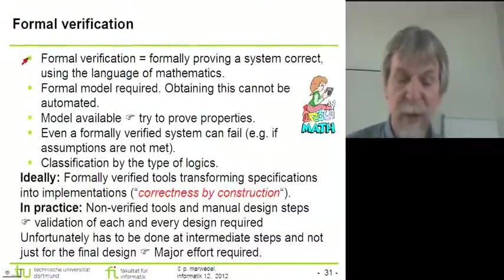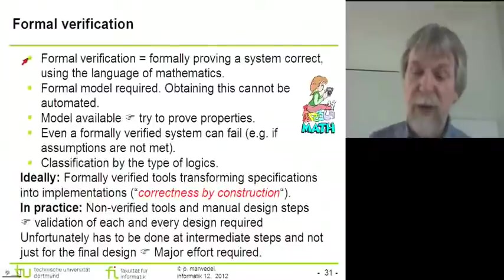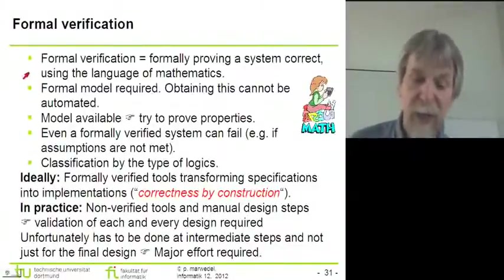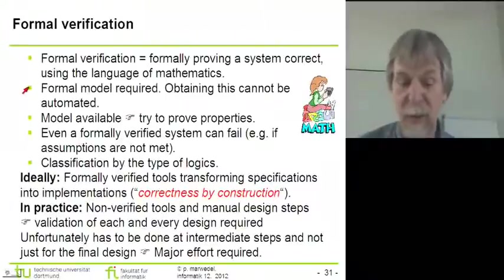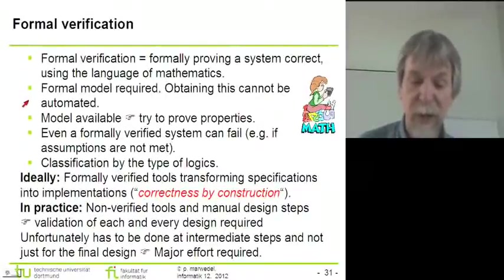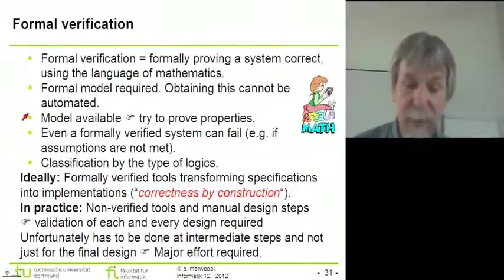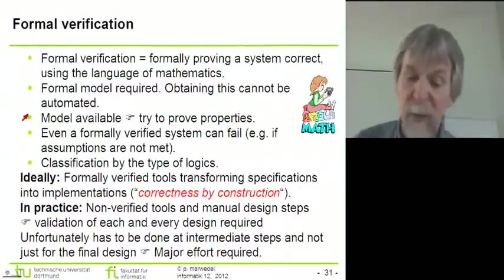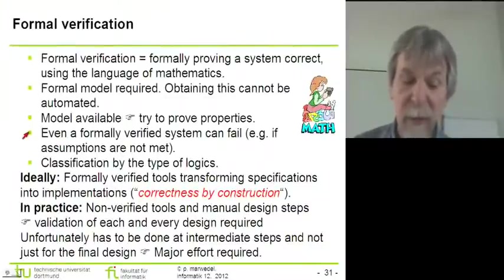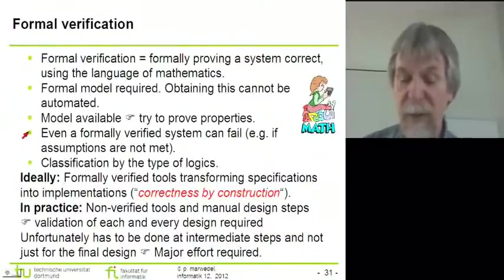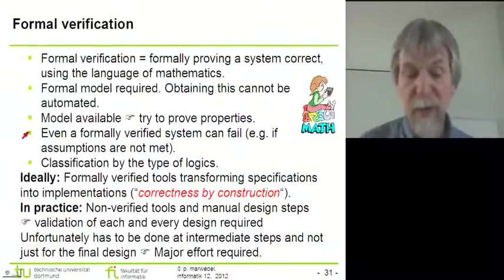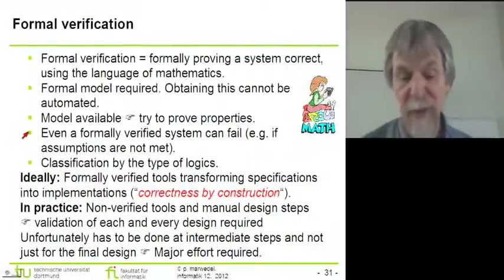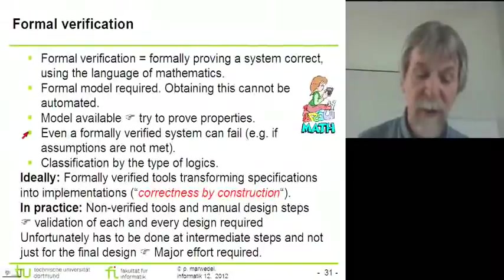In formal verification we are proving a system correct using the language of mathematics. In this case we need a formal model — obtaining the model cannot be automated. Once a model is available we can try to prove the properties, but we have to be aware that even a formally verified system can fail, for example if some of the underlying assumptions are not met. If we assume a certain behavior of the environment and the environment behaves differently, even a formally verified system might fail.